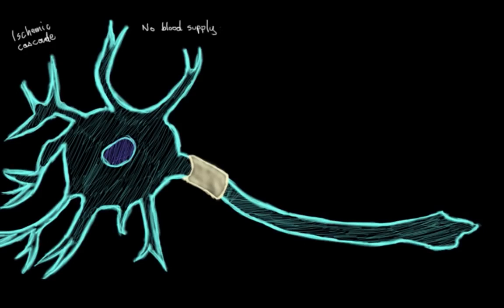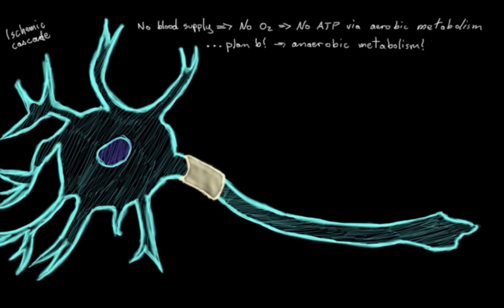So without blood supply, and therefore a lack of oxygen, neurons will lose their ability to create energy in the form of ATP through aerobic metabolism. So the neuron then goes on to plan B for energy production. It switches over to anaerobic metabolism, which is what happens in the absence of oxygen.